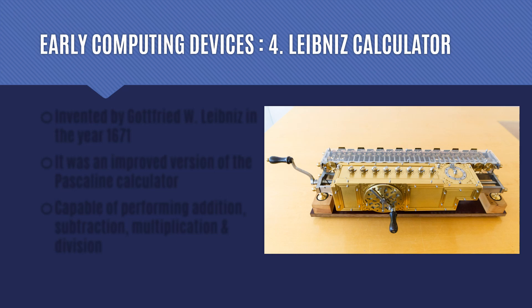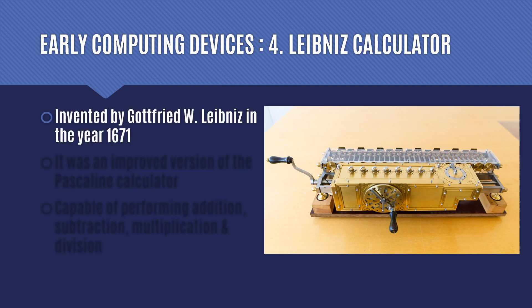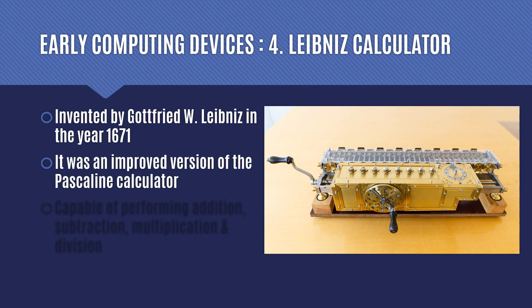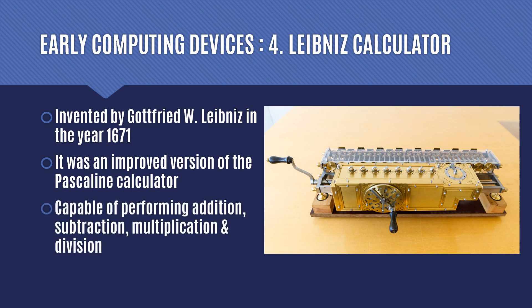The next device is the Leibniz Calculator, which was actually an improved version of the Pascaline. It was invented by mathematician Gottfried W. Leibniz in the year 1671. All these devices were invented by mathematicians and scientists, and their only job was to perform calculations. Unlike the Pascaline which could only perform addition and subtraction, the Leibniz Calculator was capable of performing all four operations: addition, subtraction, multiplication and division.